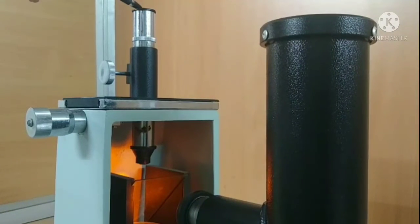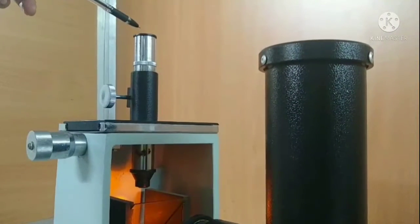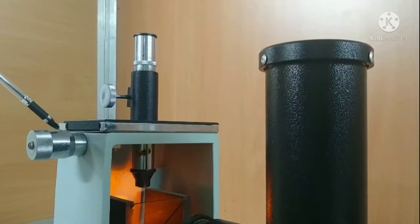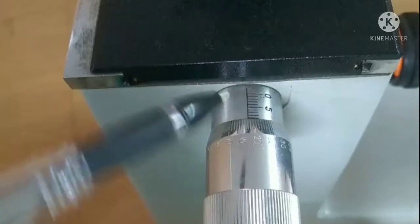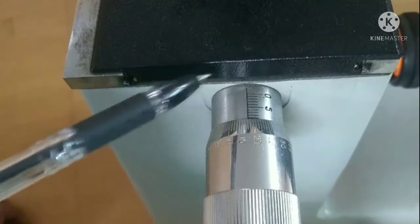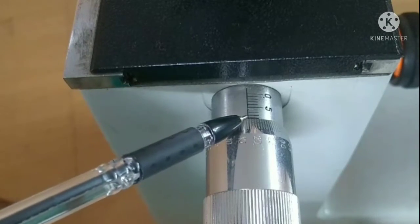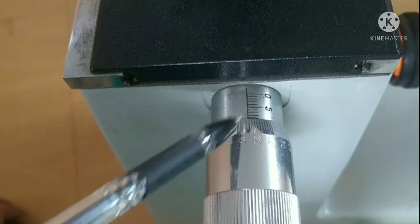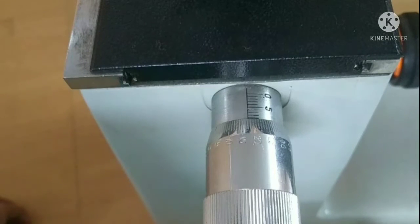From here we can see the Newton's rings. We take the readings with the help of the micrometer screw fitted alongside with the microscope. This is the micrometer screw, this is the reference line, and this is the circular scale on which we have divisions up to 100.